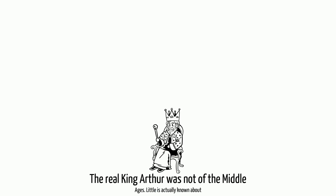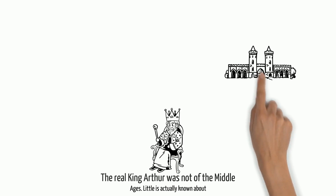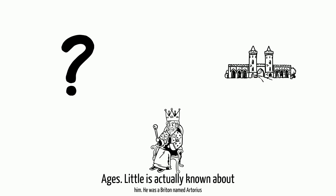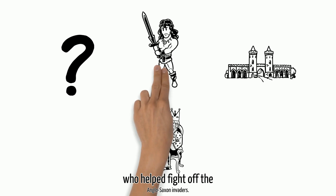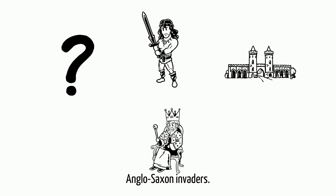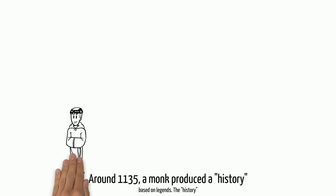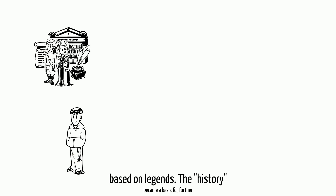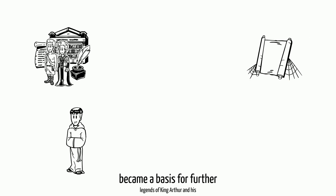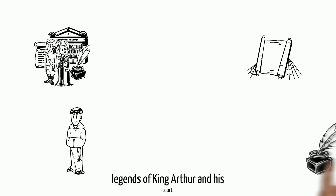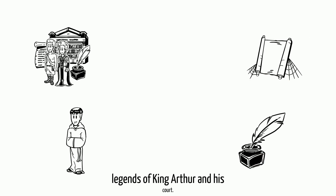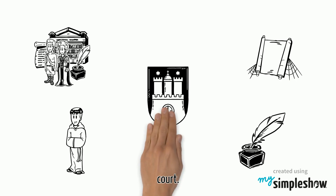The real King Arthur was not of the Middle Ages. Little is actually known about him. He was a Briton named Artorius, who helped fight off the Anglo-Saxon invaders. Around 1135, a monk produced a history based on legends. That history became a basis for further legends of King Arthur and his court.